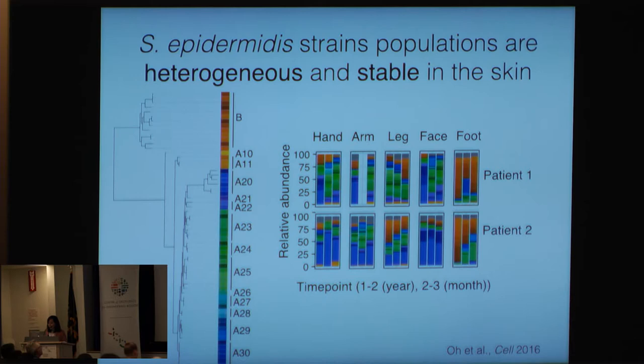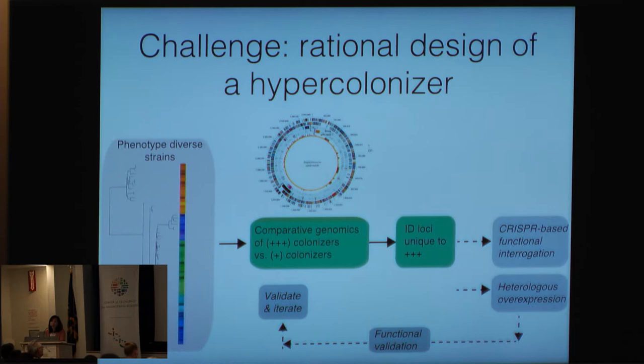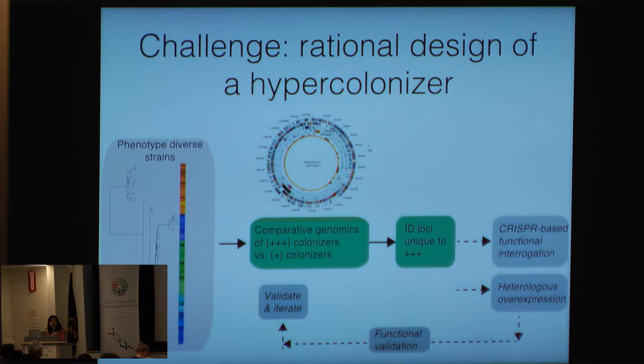A given Staph epidermidis community is actually relatively refractory to obtaining new Staph epidermidis strains — for example, from a neighbor. So we've gone back to the basics and want to identify features of different Staph epidermidis strains that would make it a very effective colonizer in different environments. We're using computational approaches to understand how these different strains differ, identifying genetic features that we can then engineer with CRISPRs and synthesis approaches to create an engineered Staph epidermidis with genetic characteristics that make it a more universal but also competitive colonizer.